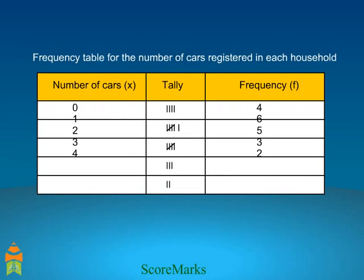By looking at this frequency distribution table quickly, we can see that out of 20 households surveyed, 4 households had no cars, 6 households had 1 car, 5 households had 2 cars, 3 households had 3 cars, and 2 households had 4 cars.